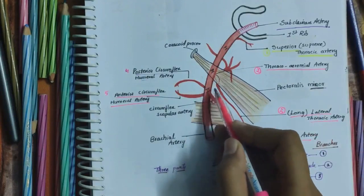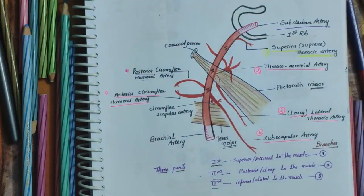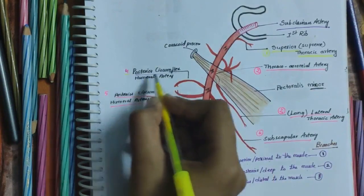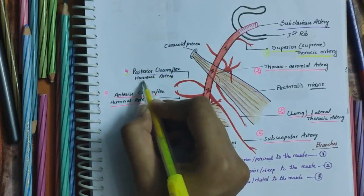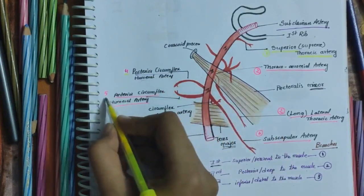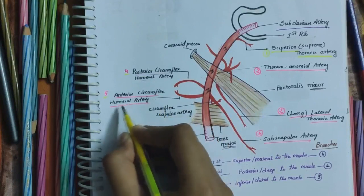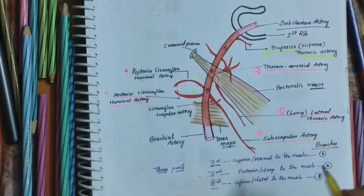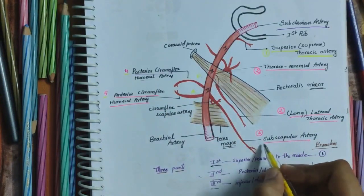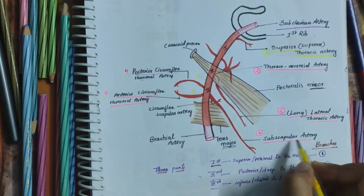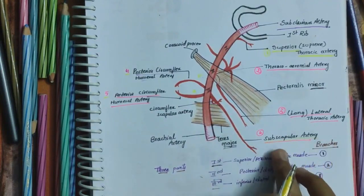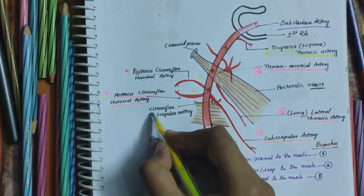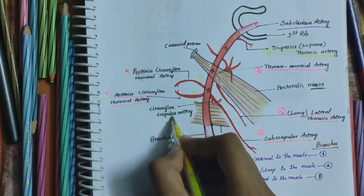The third part of the axillary artery gives three branches. The first branch is the posterior circumflex humeral artery. The second branch is the anterior circumflex humeral artery. And the third branch is the subscapular artery. The subscapular artery also gives a small branch known as the circumflex capillary artery.